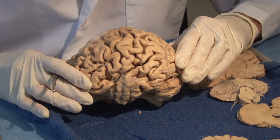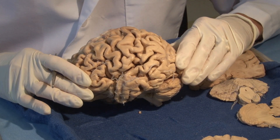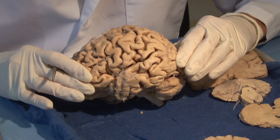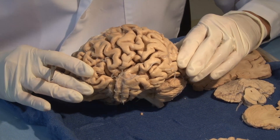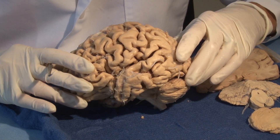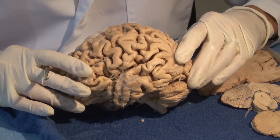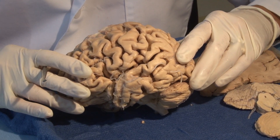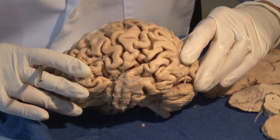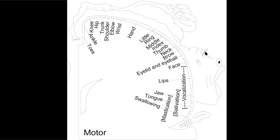Let's talk about the corticospinal tract, truly important and critical for voluntary willed motor control. Whether it's over your cranial nerves, such as my vocal cords as I speak.